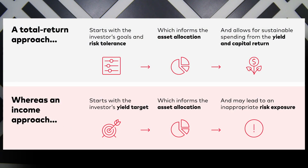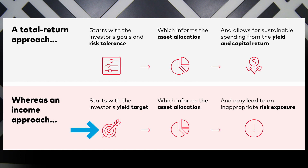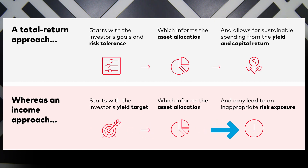Here's a great graphic from Vanguard explaining how portfolios are constructed under each strategy. A total return approach starts with goals and risk tolerance, which determines asset allocation, then allows for spending from income and capital return. Whereas an income approach starts with a yield or income target, which determines asset allocation, which could end with more risk exposure than intended.